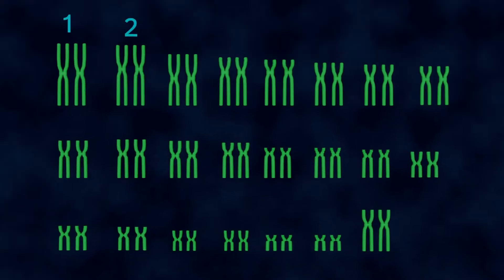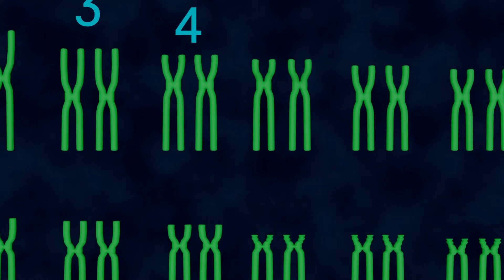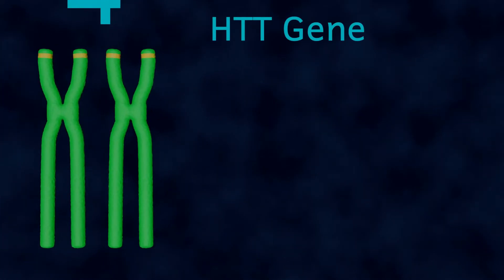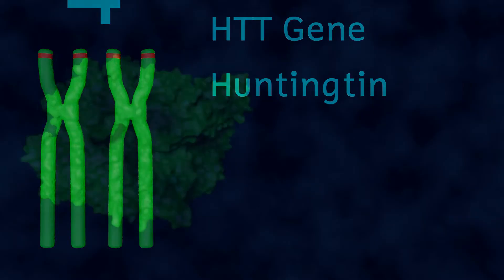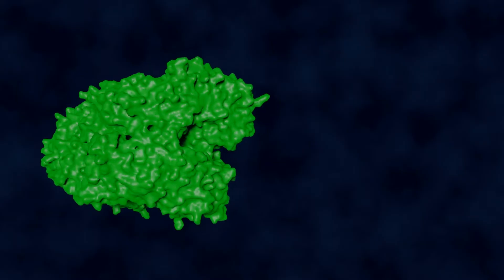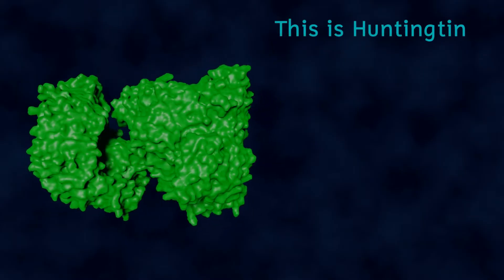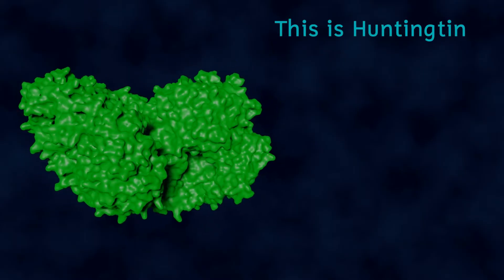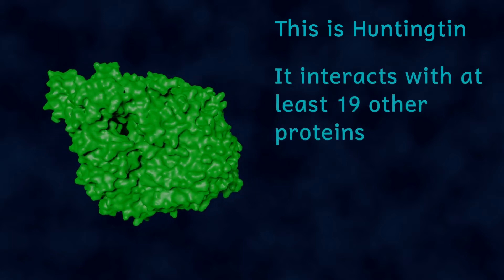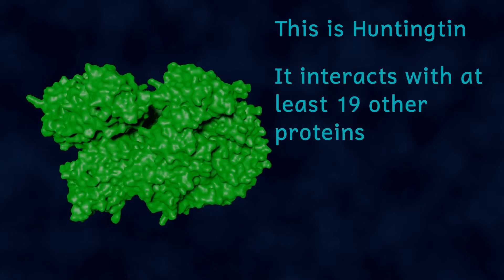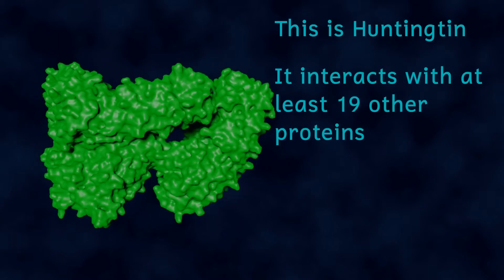Located on the short P arm of chromosome 4 is the HTT gene. This gene codes for a protein called Huntington. So what is the role of this protein? Well it isn't fully understood exactly what this protein does, but it looks like it's got a number of different functions within cells. So let's have a look at those.